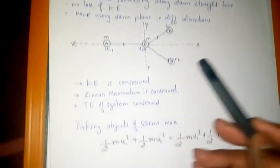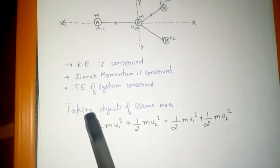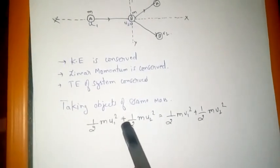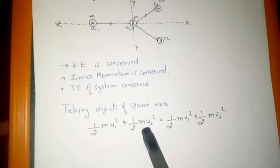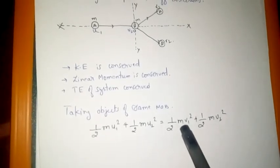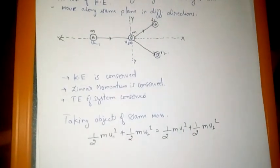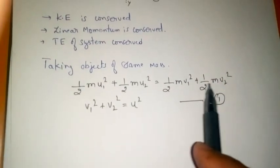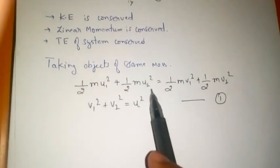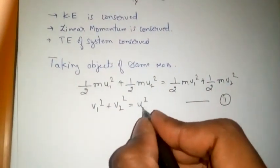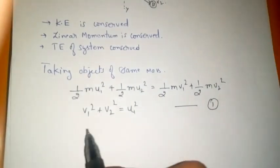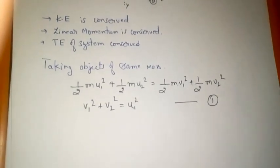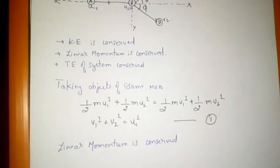After the collision they move in different directions with velocities v1 and v2. Since kinetic energy is conserved: half·m·u1² + half·m·u2² = half·m·v1² + half·m·v2². Since u2 is zero, we cancel half and m, giving us Equation 1: v1² + v2² = u1².